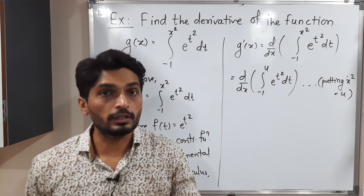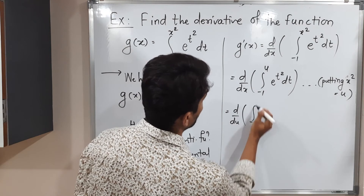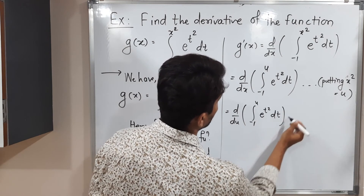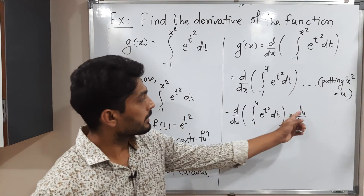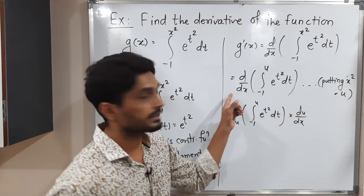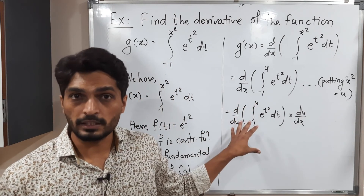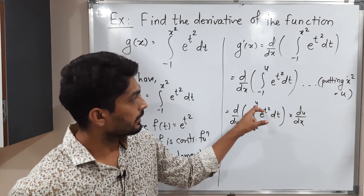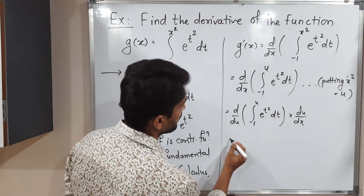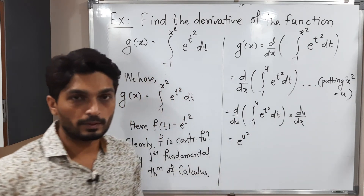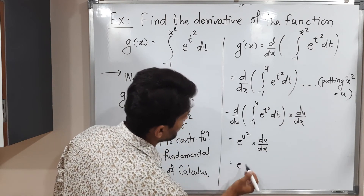We use the chain rule. By the chain rule we write: derivative with respect to u of integration from minus 1 to u of e raised to t square dt, times du by dx. The du terms cancel and we have d by dx again. Now the first fundamental theorem of calculus is applicable since the upper limit of the integral is u and the variable is also u. Applying it to the bracket, we get e raised to u square, times du by dx.